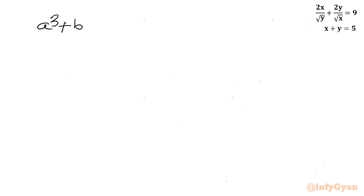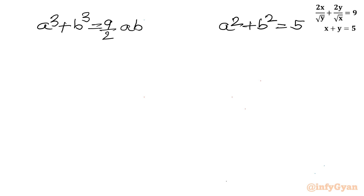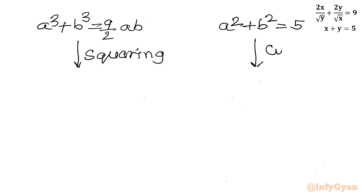So we now have two equations: a cubed plus b cubed equals 9 over 2 ab, and a squared plus b squared equals 5. I will consider squaring the first equation and cubing the second equation.